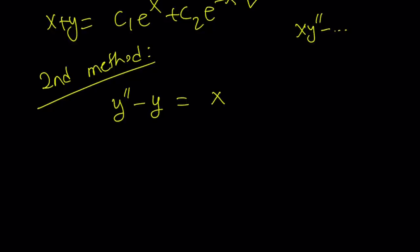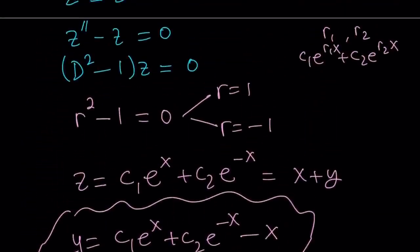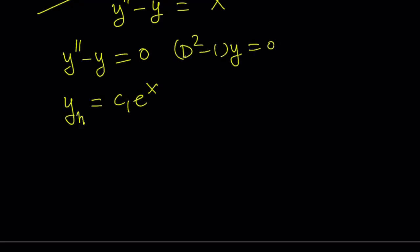The homogeneous equation is y double prime minus y equals 0. This is the same equation we dealt with before, except it was the z variable. This equation can be written as D squared minus 1 times y equals 0, and its homogeneous solution yh is c1 e to the power x plus c2 e to the power negative x.